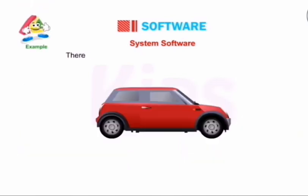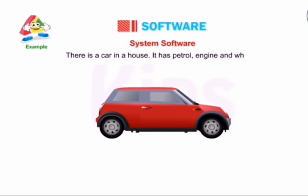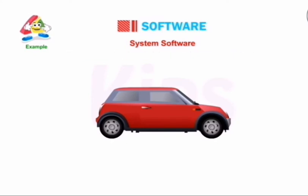Let's look at a very interesting example from the book. It's a car. A car has petrol, an engine, and wheels — everything is in it. But it's not moving. Look at the picture — it is not moving.